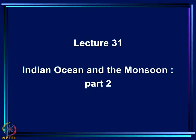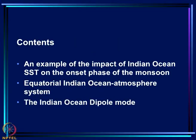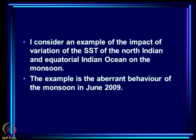We will continue our discussion on the Indian Ocean and the monsoon. It is important to understand how the variability of convection in the monsoon region depends on the variability of SST of the north Indian and equatorial Indian Ocean. I am going to first talk about an example which is the aberrant behavior of the monsoon in June 2009.